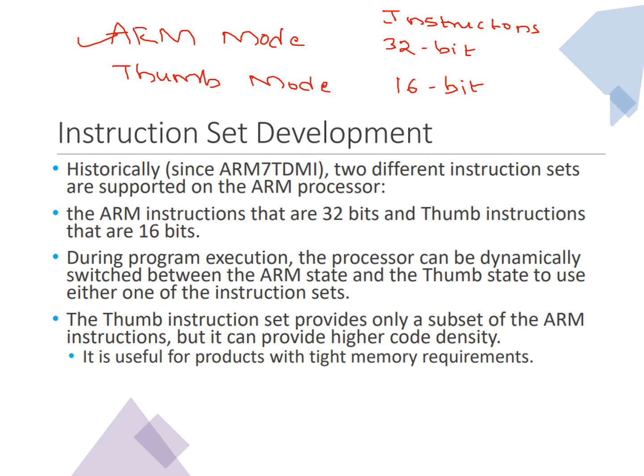One important feature is that during programming, the processor can be dynamically switched between ARM state and Thumb state, or vice versa. That means if you are operating on 32-bit data and want to switch to 16-bit data, there is a mechanism to do so. We will see this in module 2 when we cover the instruction set. To summarize: ARM mode means 32-bit instruction mode; Thumb mode means 16-bit instruction mode.